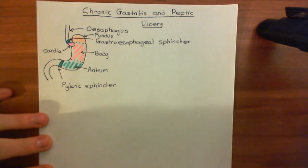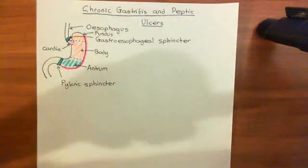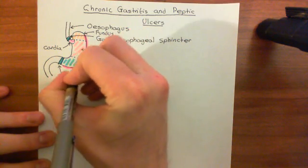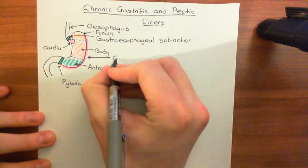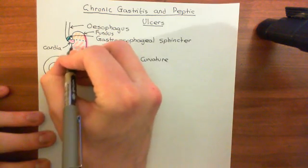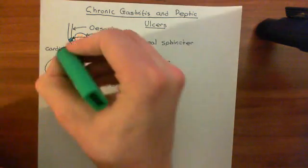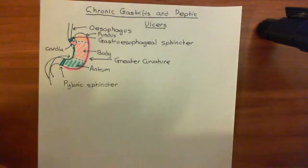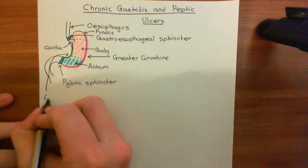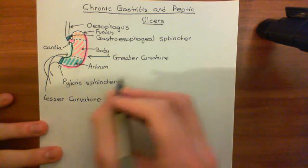A few more anatomical terms: this larger curved aspect of the stomach — which I'm now highlighting in purple — is known as the greater curvature of the stomach. And this smaller curve on the other side is then known as the lesser curvature, which I'll colour in green. Those are terms you'll often hear anatomists use: the greater curvature and the lesser curvature of the stomach.